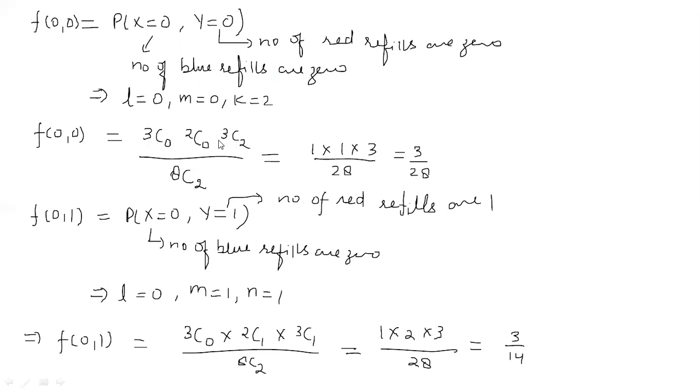To total number of ways kitne huye. 3C0 into 2C0 into 3C2 divided by, by default, without knowing the colors, in how many ways you can draw two balls out of eight? 8C2. So when we solve this, we get 3 upon 28.